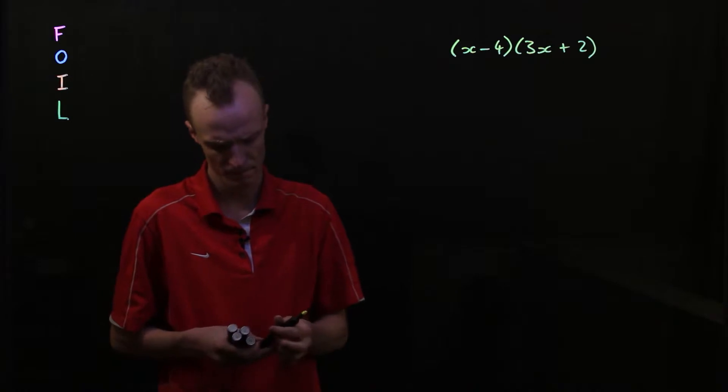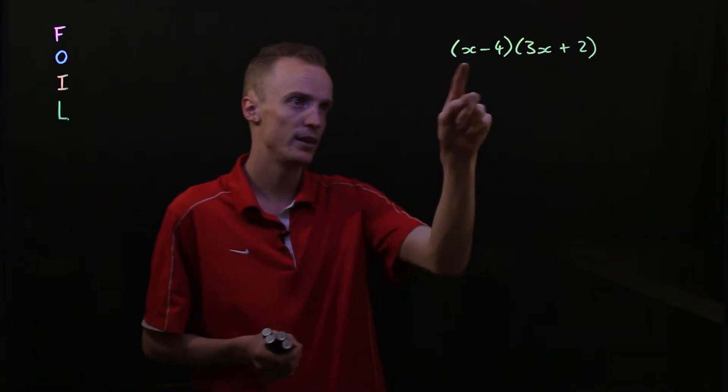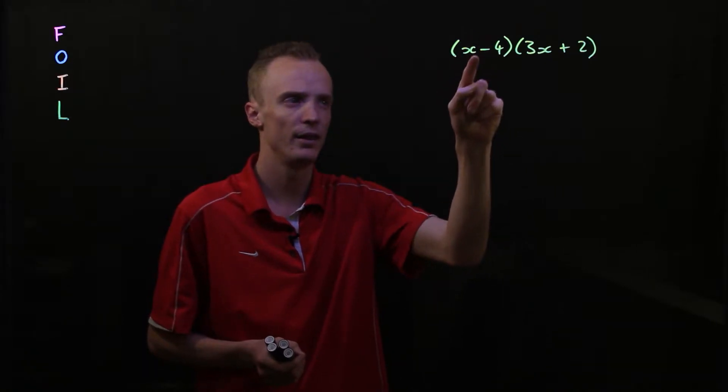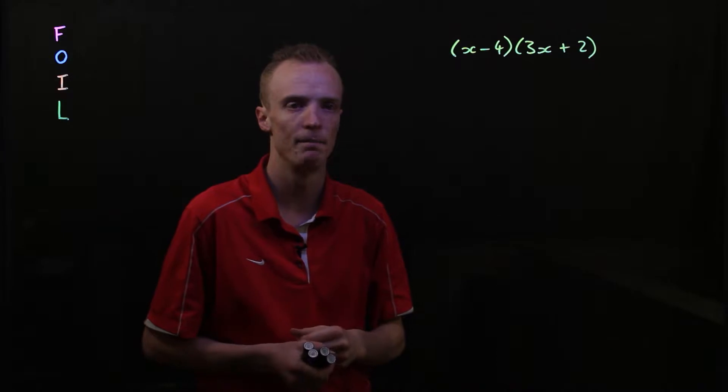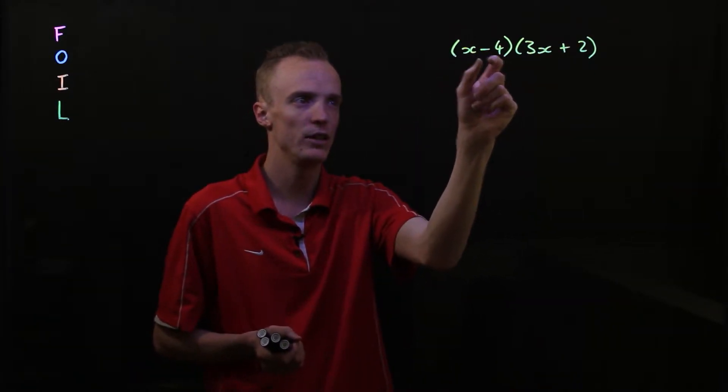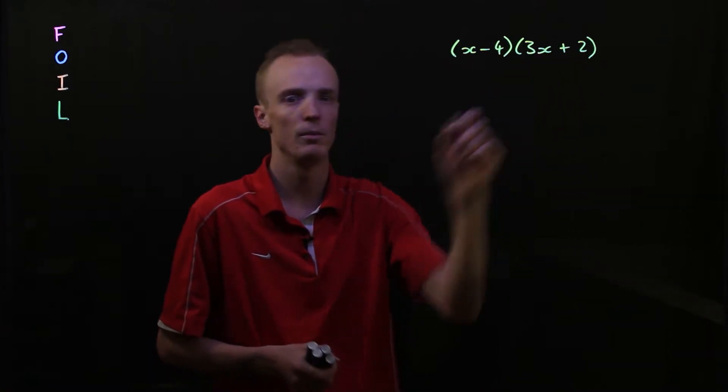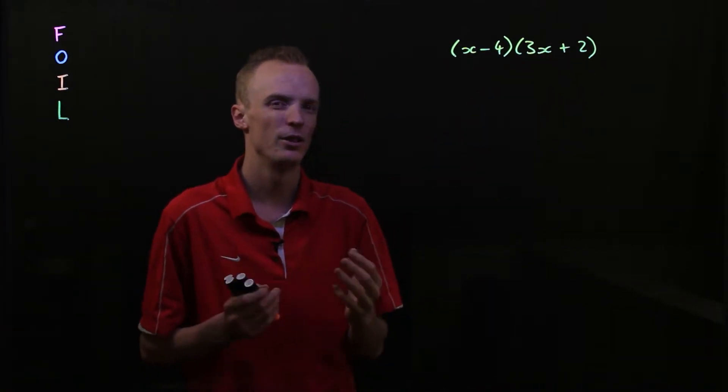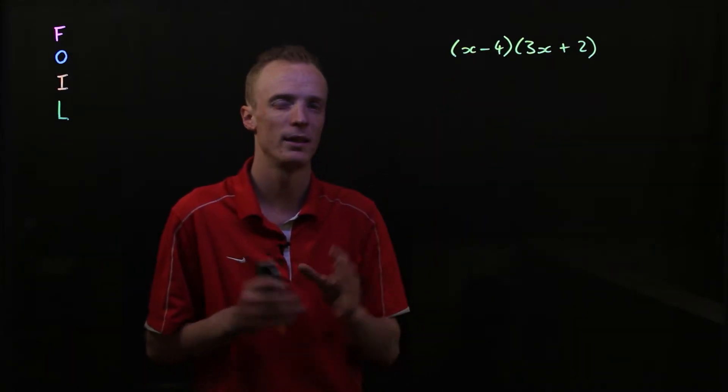What does that mean? Well, what that means is everything in this bracket here, everything in this bracket is going to multiply everything in this bracket here. So I would need to multiply each individual term of this bracket with each individual term of this bracket here. So in essence, there's going to be four multiplications I'm going to do in this particular example.